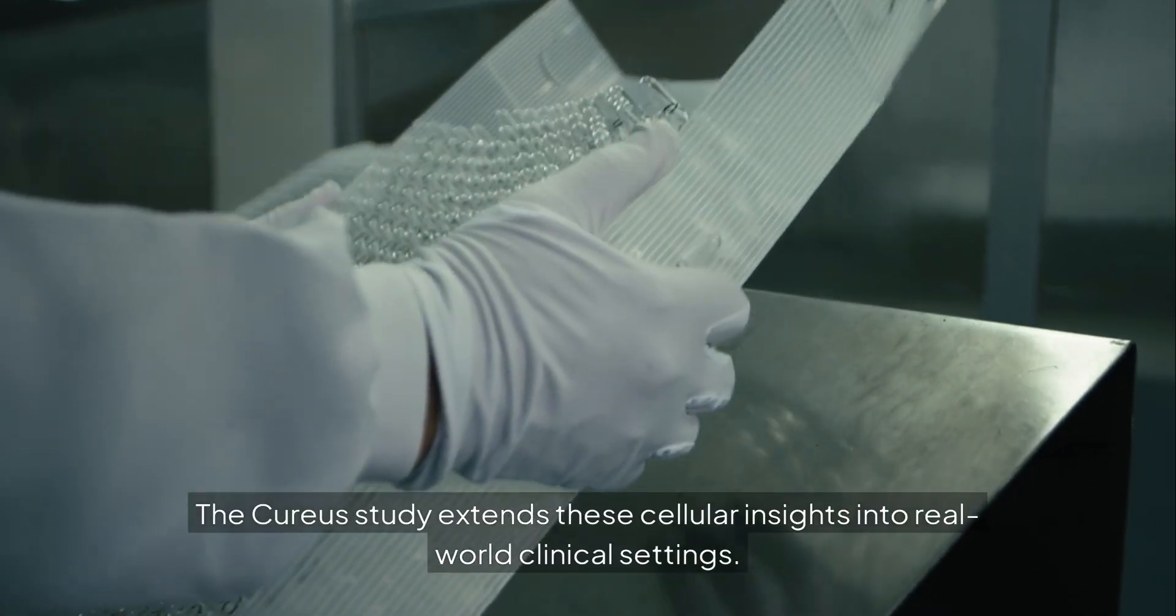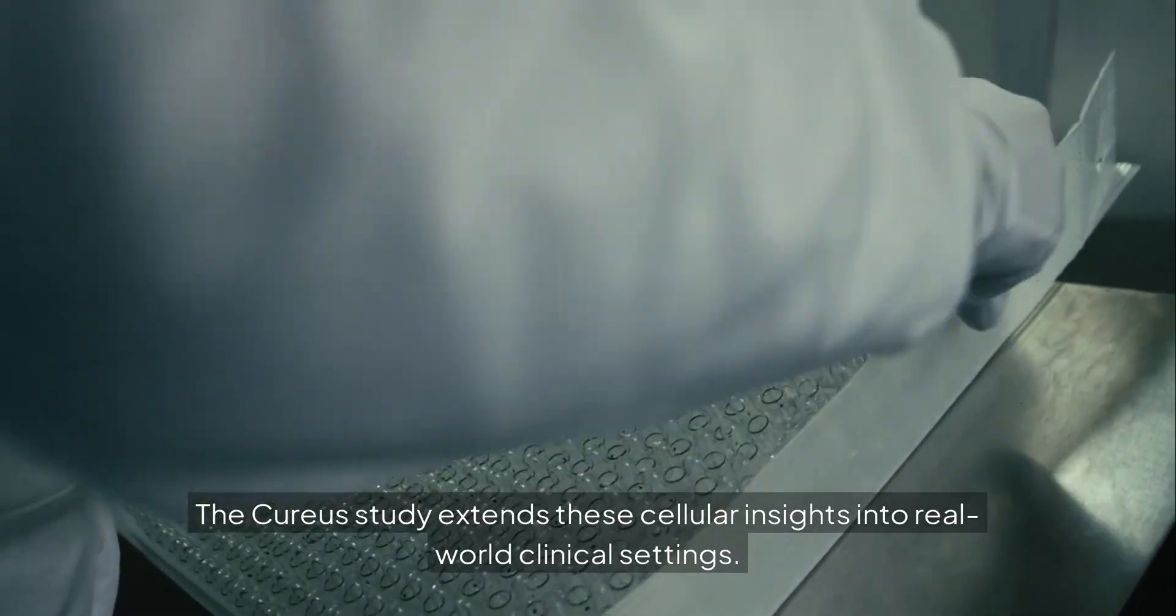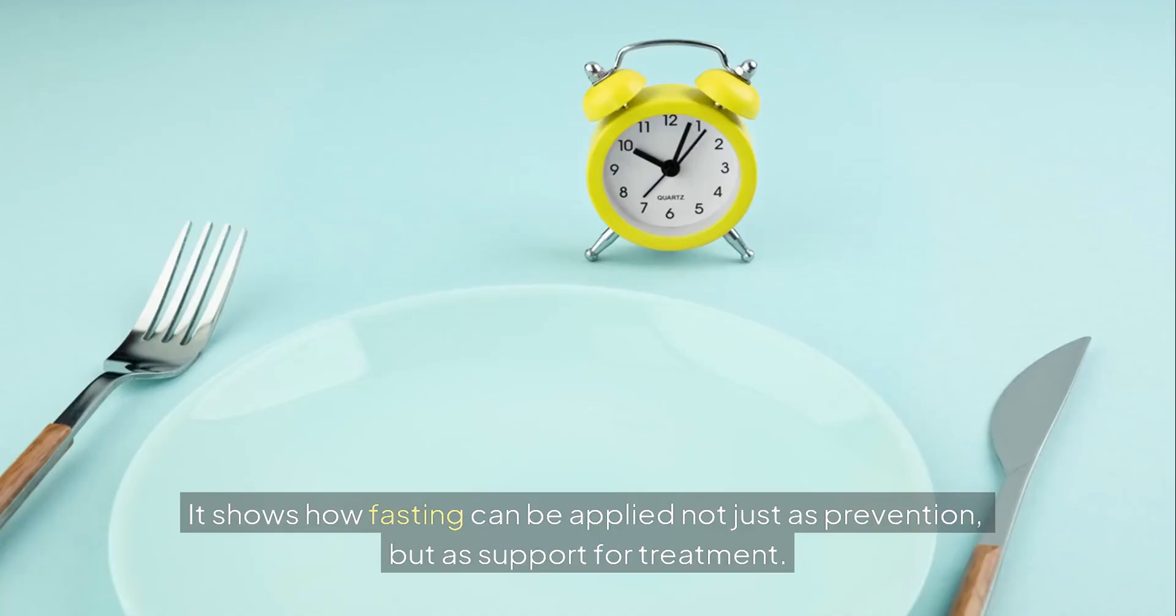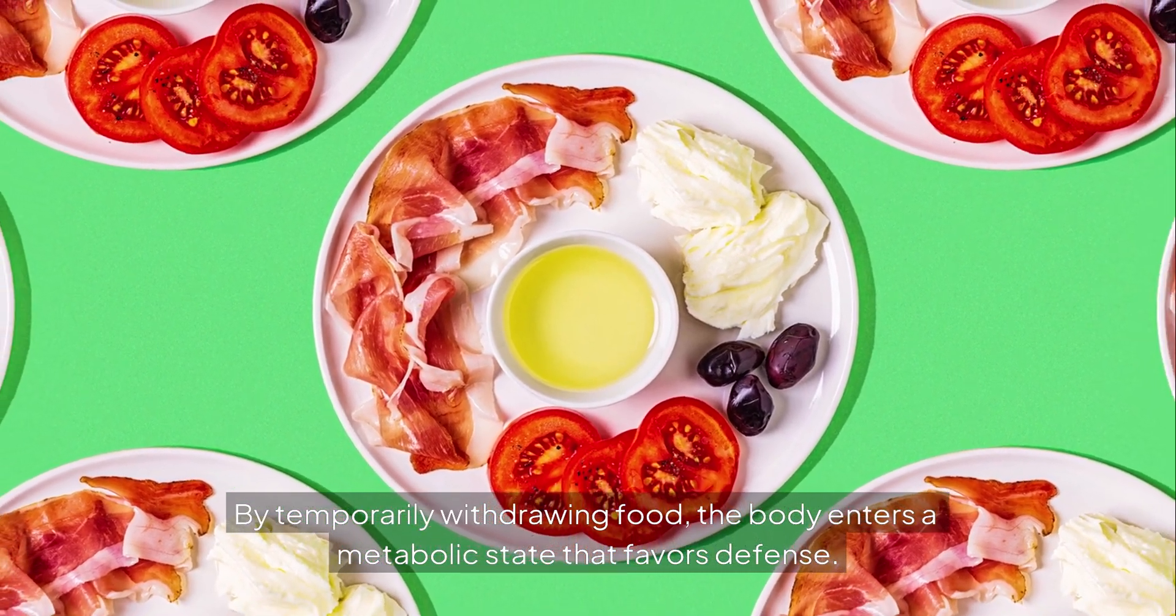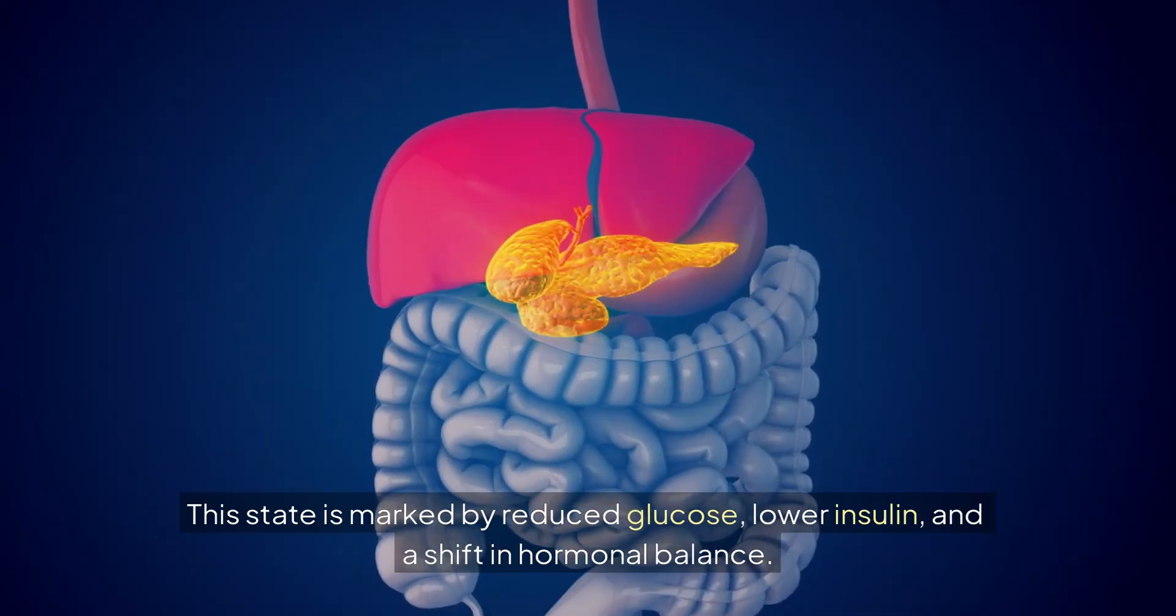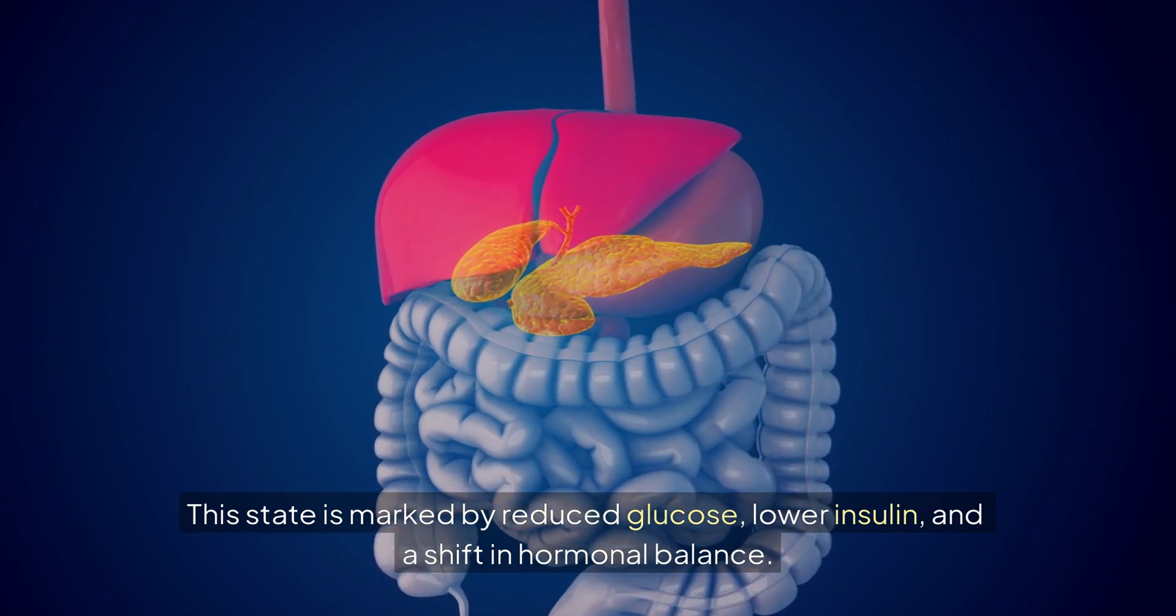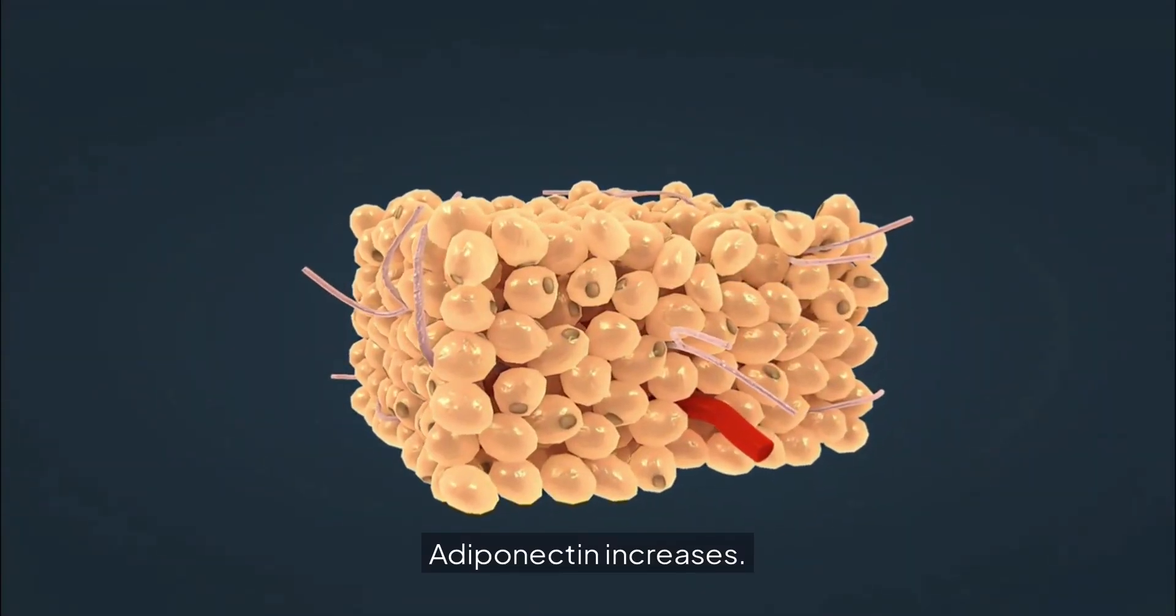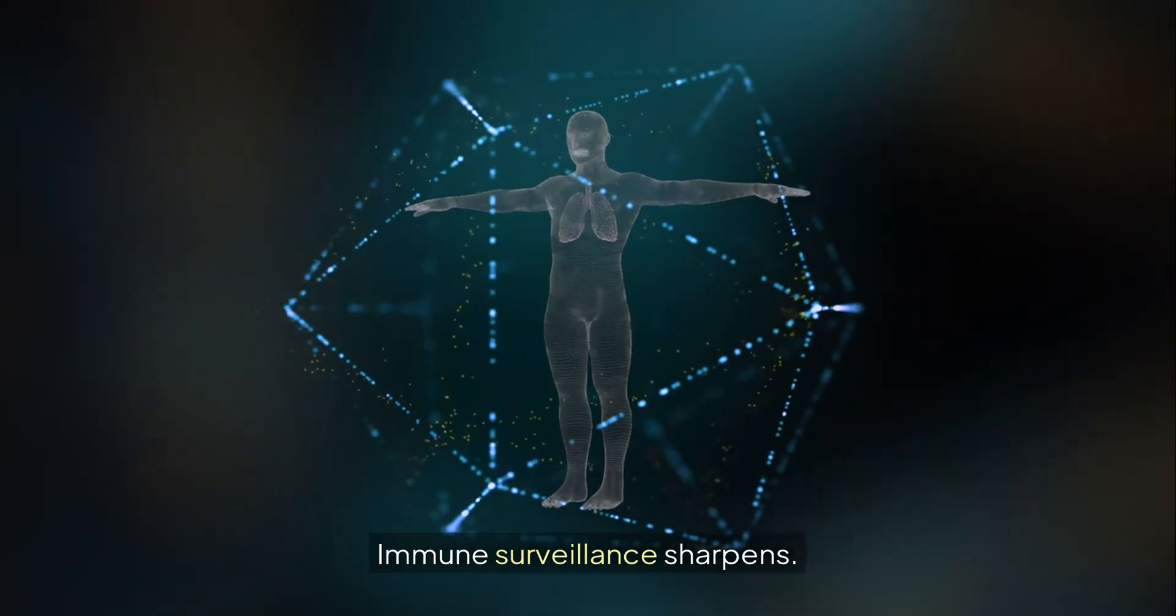The CURIOUS study extends these cellular insights into real-world clinical settings. It shows how fasting can be applied not just as prevention, but as support for treatment. By temporarily withdrawing food, the body enters a metabolic state that favors defense. This state is marked by reduced glucose, lower insulin, and a shift in hormonal balance. Adiponectin increases. Inflammatory cytokines drop. Immune surveillance sharpens.